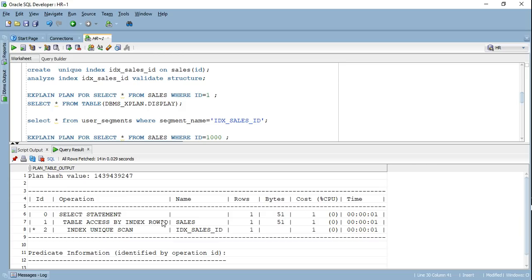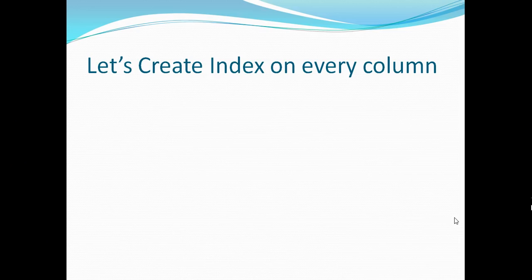My B-tree index is called a balanced tree index because in order to identify any data on the lowest level of blocks, I have to traverse the same number of blocks. Changing the ID value doesn't increase the cost — it has to traverse the same three blocks from my index and then fetches the data from the table based on the row ID found in the leaf block.